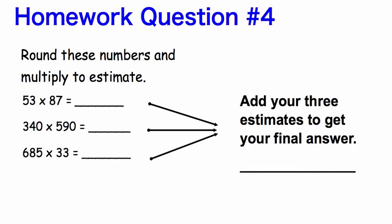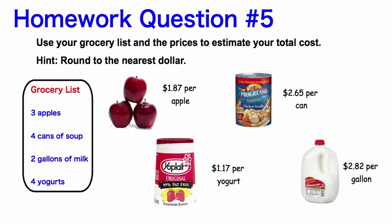Homework question number four: round these numbers and multiply to estimate. Round them so they are easy numbers to multiply, then add your estimates together to get your final answer. Homework question number five: use your grocery list and the prices to estimate your total cost, rounding to the nearest dollar. For example, three apples at about two dollars per apple. Work through the soup, yogurt, and milk the same way. We'll see you tomorrow — have a good night.